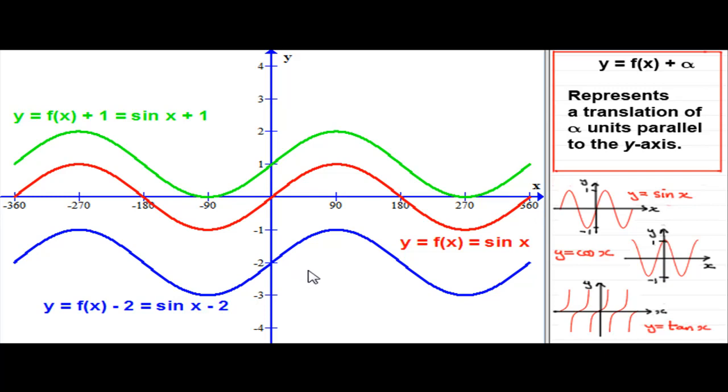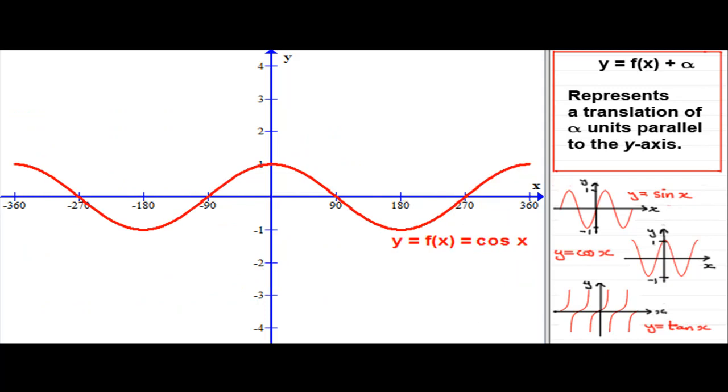What we'll look at now, and I'll give you an opportunity to have a go, is we'll look at the graph of cos x. Now, here's the graph, then, of y equals cos x. It's again a wave function going between minus 1 and 1.